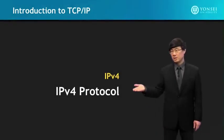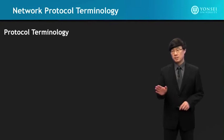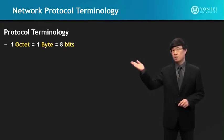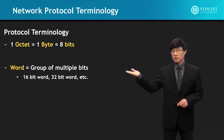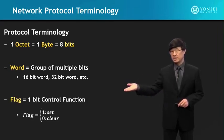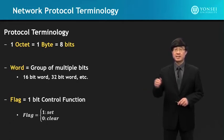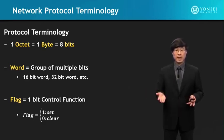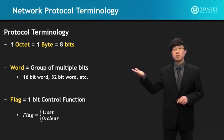In this lecture, we'll study about IPv4 protocol. First, protocol terminology: one octet is one byte, which equals eight bits — an octet and a byte are the same thing. A word is a group of multiple bits, such as a 16-bit word or 32-bit word. A flag is a one-bit control function; if the bit is set to one, the flag is set, and if set to zero, the flag is clear. A flag is used as a control function within the protocol header, used in IPv4, IPv6, TCP, UDP, and other IETF protocols.